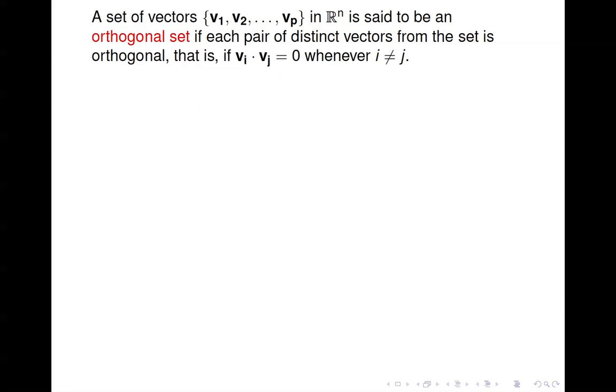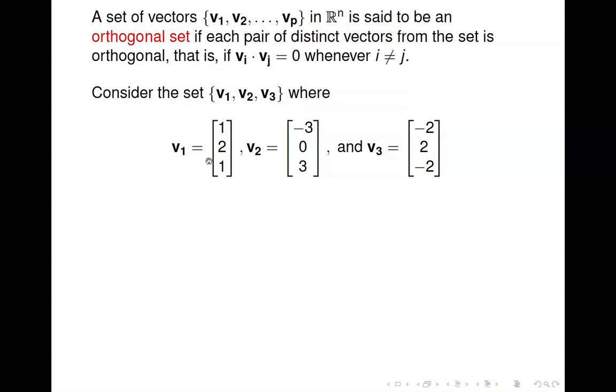We say a set is an orthogonal set if you can pull out any two vectors from the set and their inner product is zero. So if I have this set {v1, v2, v3} and I want to see if it's an orthogonal set, then I need to compute the inner product of each pair of vectors.